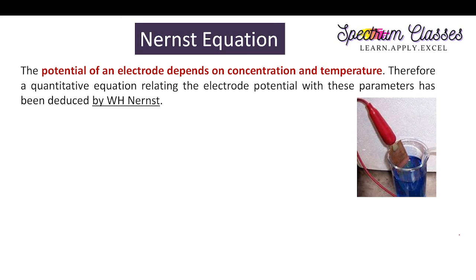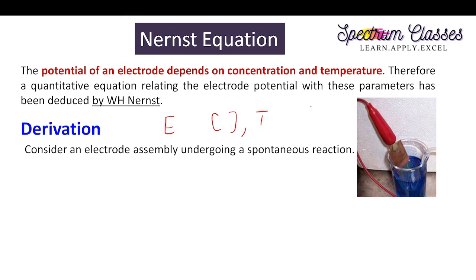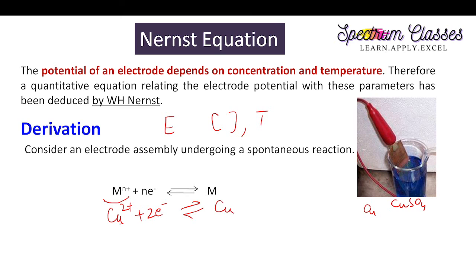Now we start with the derivation of the Nernst equation. As mentioned, this equation gives us the relationship between electrode potential, concentration, and temperature. To derive it, first we need to consider a spontaneous reaction. Taking copper and copper sulfate solution for example — for generalization I have written MN+. You can also consider: Cu²⁺ + 2e⁻ ⇌ Cu. This is the half-cell reaction.